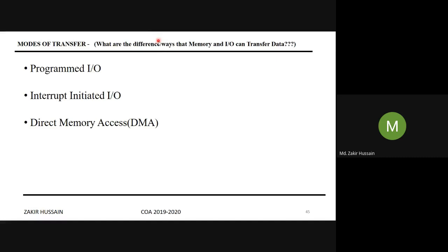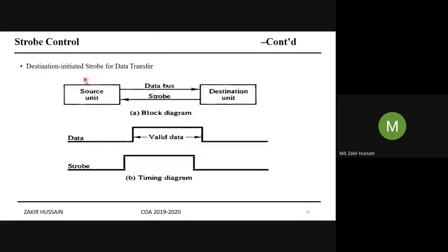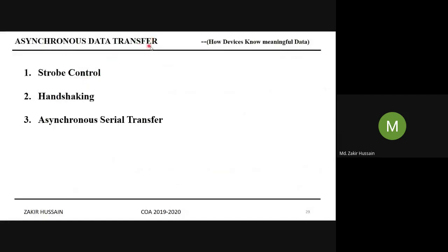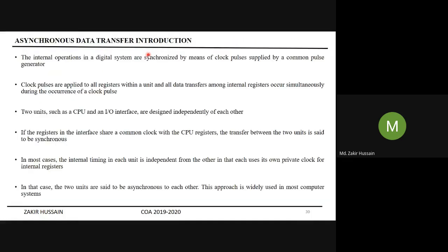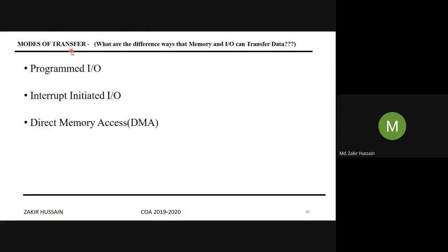What are the different means? Earlier we have seen synchronous data transfer. Here, the term 'transfer' has appeared again — in synchronous data transfer and also in modes of transfer. Some curious students may have confusion: there also transfer has come, here also transfer has come. What is the difference then?